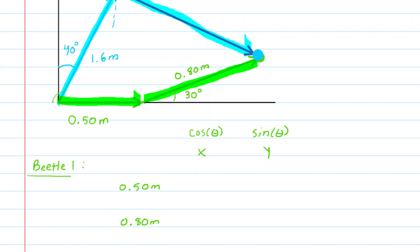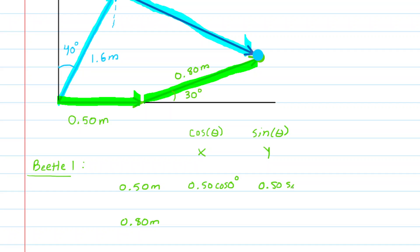Let's look at that first vector. To figure out the angle, you ask yourself how many degrees from the positive x-axis is that vector pointing? That vector is actually pointing along the positive x-axis, so the angle is 0 degrees. We have 0.5 meters times the cosine of 0 degrees for the x component, and 0.5 meters multiplied by the sine of 0 degrees for the y component.